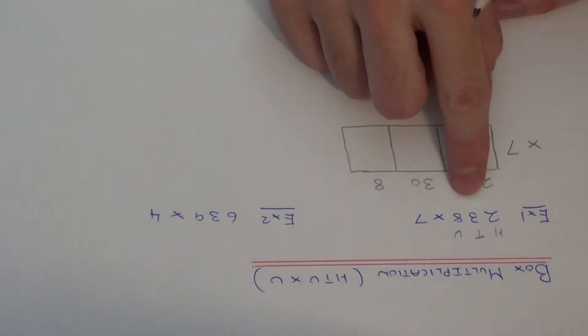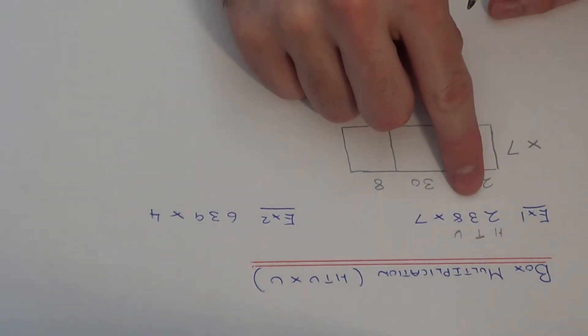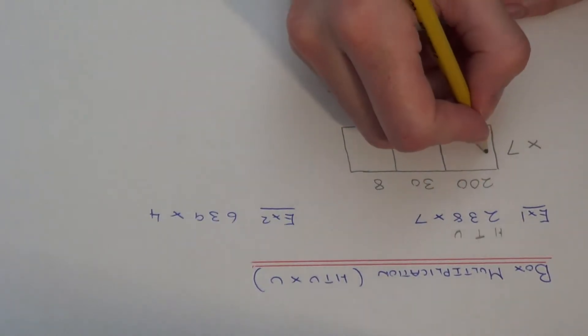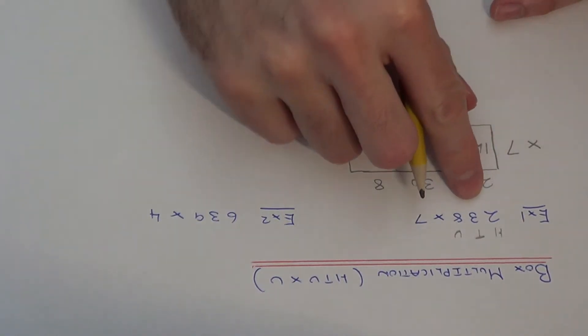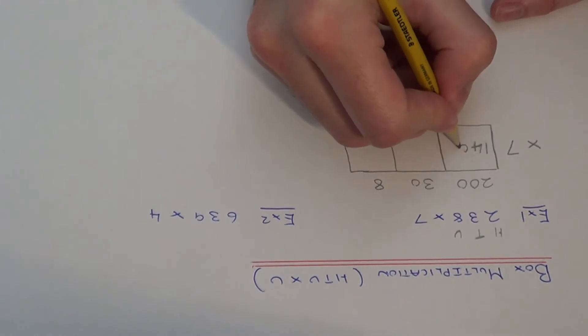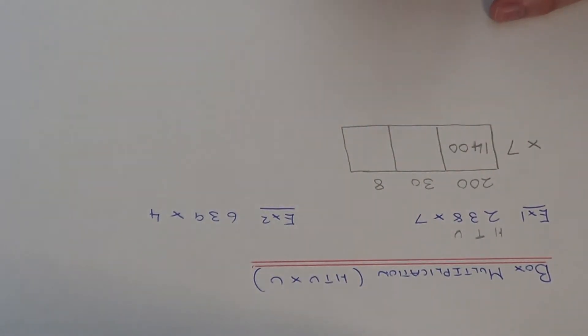So our first one is 200 times 7. Now we can cover up the zeros to make things easier. So 2 times 7 is 14, so if we write that in the box and since we've covered up two zeros we need to add those zeros back on.